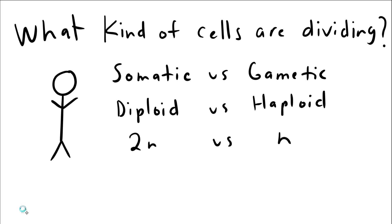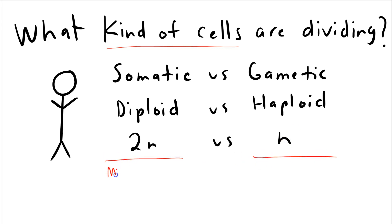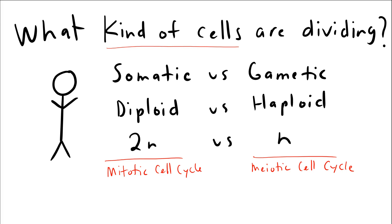A question that some students struggle with is the kind of cells that are dividing. Looking at this vocabulary: we have somatic, diploid, and 2N on one side, and gametic, haploid, and N on the other side. Somatic cells divide using the mitotic cell cycle, and gametic cells divide using the meiotic cell cycle.